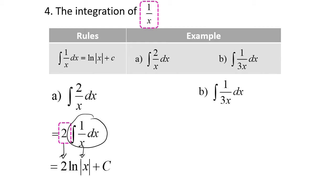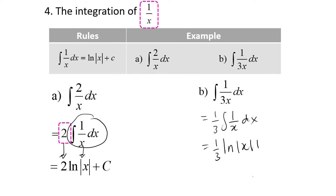For part B, when we integrate 1 over 3x dx, first we have to factorize 1 over 3. And then our final answer should be 1 over 3 ln x plus c. Simple.